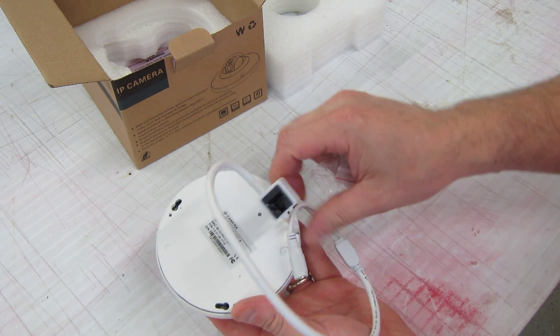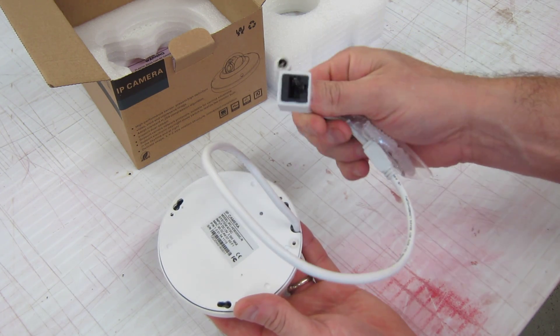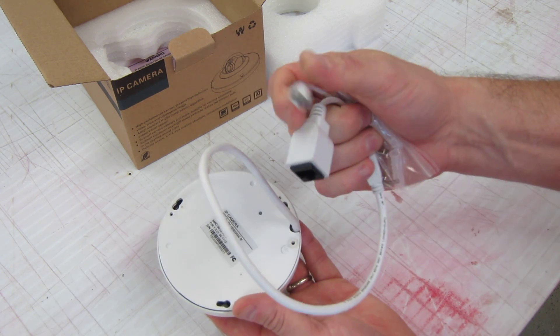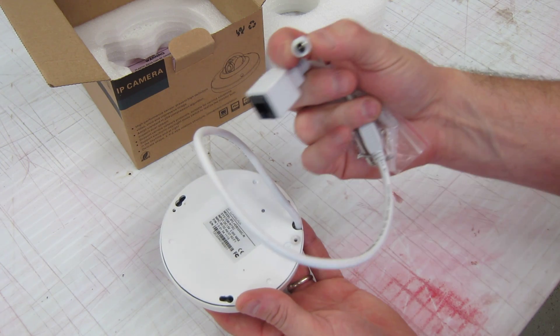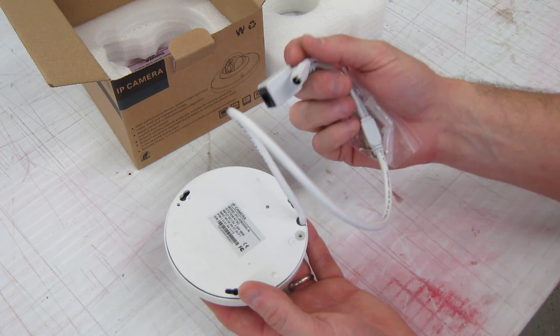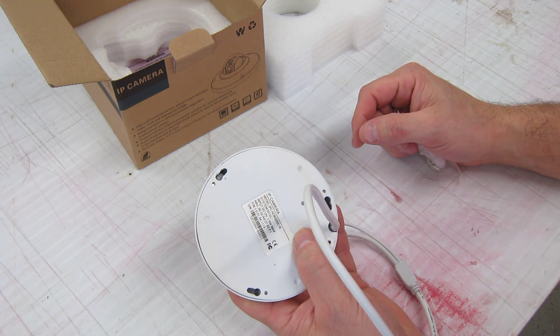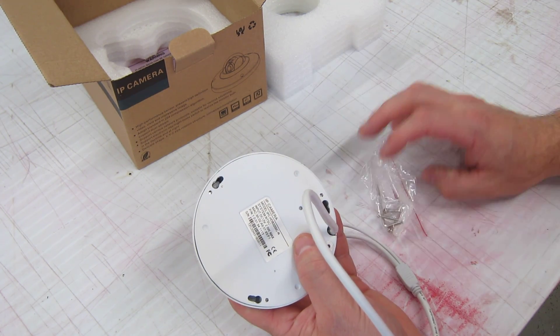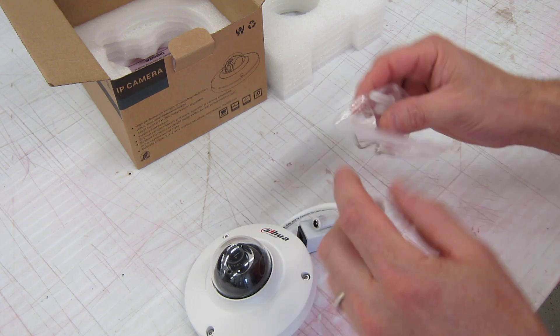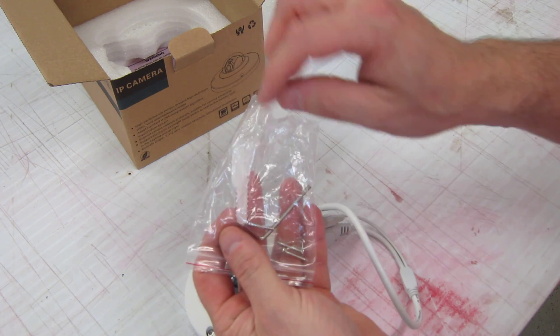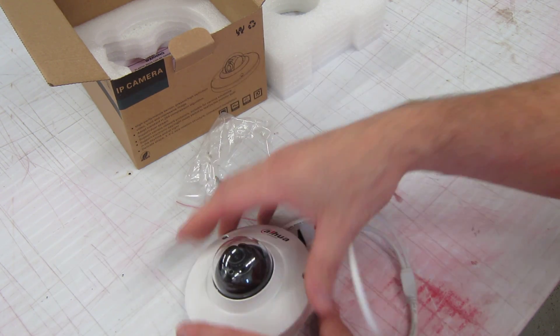You've got a PoE plug for Cat5 and Ethernet, and you can also use 12 volts if you don't want to run PoE. There are three mounting spots. I've removed the cover from the top, but it does come with tools and mounting hardware, including this Allen wrench.